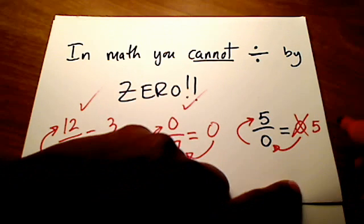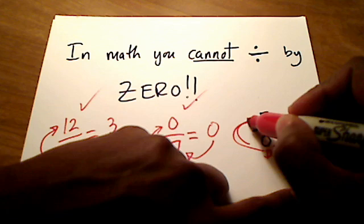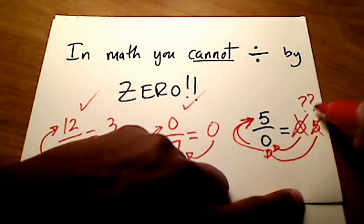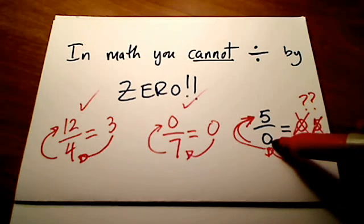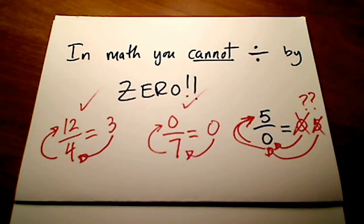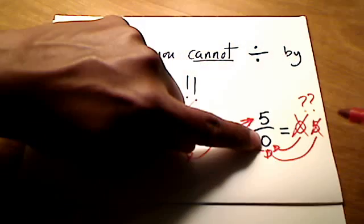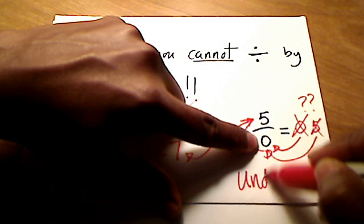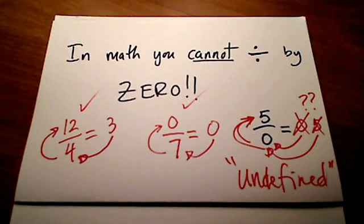Then I hear somebody say, well, how about 5? Well, it's not 5 either, because 5 times zero is not 5. In fact, there's nothing you can think of. There's no answer to this problem at all. You can never come up with any number times zero that would give you 5. That's why in math we cannot divide by zero.